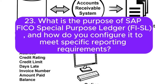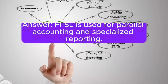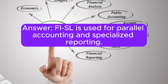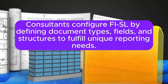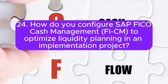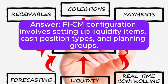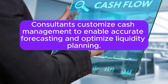Question 23: What is the purpose of SAP FICO Special Purpose Ledger (FI-SL), and how do you configure it to meet specific reporting requirements? FI-SL is used for parallel accounting and specialized reporting. Consultants configure FI-SL by defining document types, fields, and structures to fulfill unique reporting needs. Question 24: How do you configure SAP FICO Cash Management (FI-CM) to optimize liquidity planning in an implementation? FI-CM configuration involves setting up liquidity items, cash position types, and planning groups. Consultants customize cash management to enable accurate forecasting and optimize liquidity planning.